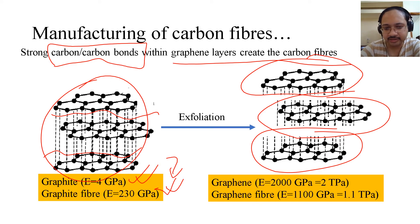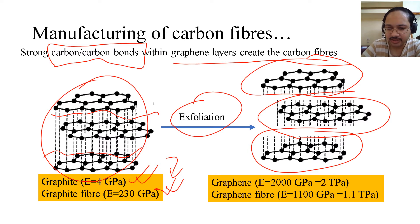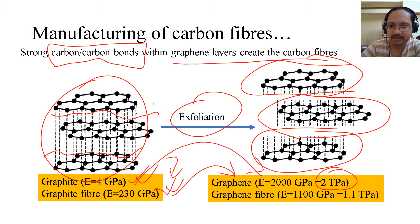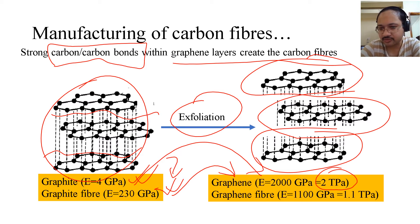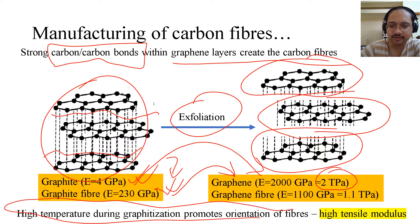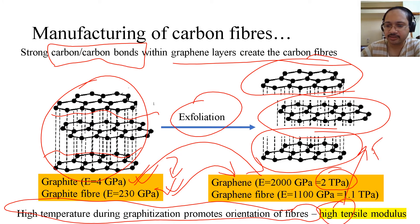After exfoliation, graphene's Young's modulus increases to 2 TPa (2000 GPa). So from graphite particles to graphene, that is an increase of three orders of magnitude, and graphene fibers also achieve a Young's modulus close to 1.0–1.1 TPa. This means high temperature during graphitization promotes orientation of the carbon layers, hence the tensile modulus increases.